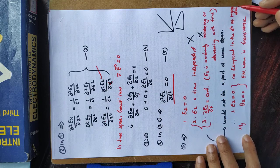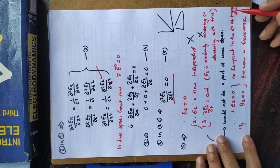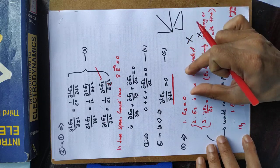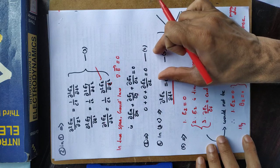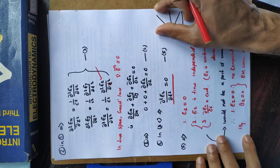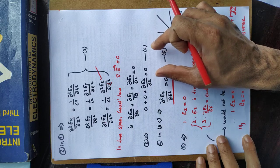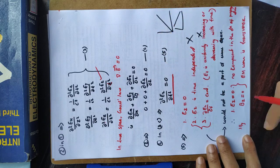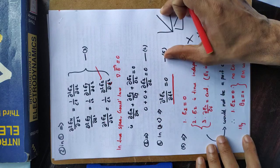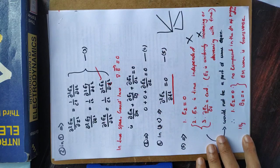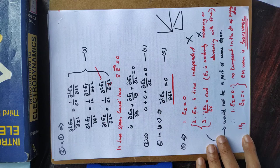There is no component in the direction of propagation. The electric field cannot vary in the z direction — it cannot have a z component. This condition shows that the electric field satisfies a transverse wave equation: it can only vary in the x-y plane, perpendicular to the direction of propagation.